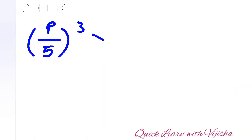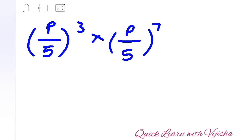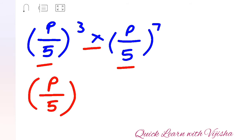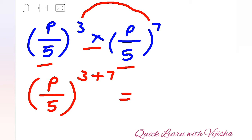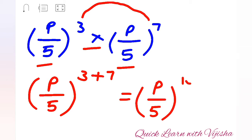Let's see one more example: (p/5) raised to 3 multiplied by (p/5) raised to 7. First we check — both bases are the same and it is multiplication, so we add the indices: (p/5) raised to (3 + 7), which gives us (p/5) raised to 10. That is your answer for multiplication.